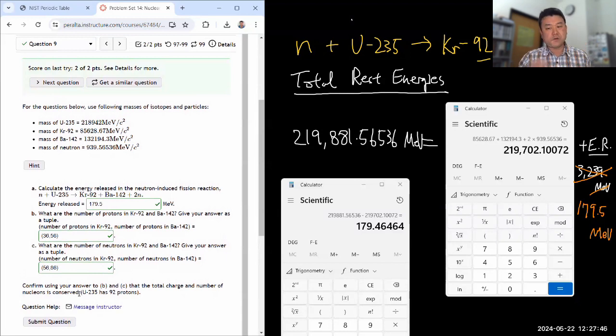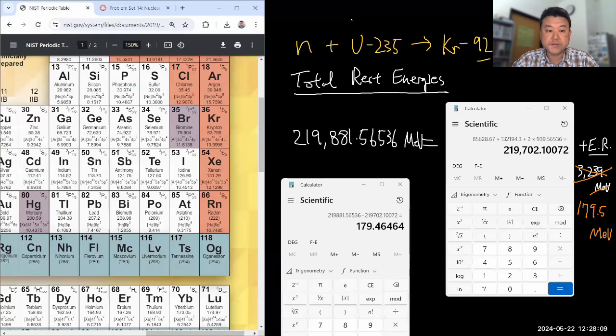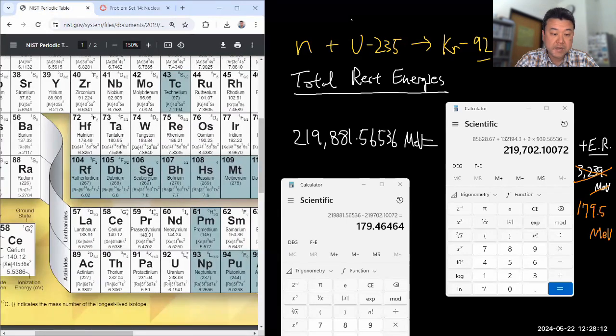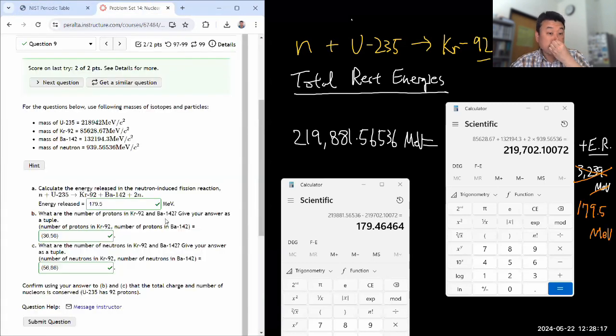Confirm using your answer to B and C that the total charge and the number of neutrons is conserved. Right. So in the fission reaction, all that amounts to is just rearranging of where the protons are, where the neutrons are. In order to change the actual number of protons and neutrons, you need a beta decay, which is topic of the next chapter. So yeah, with 36 and 56 protons, total of 92 protons, that matches with the atomic number of uranium, 92. So 92 protons came in, 92 protons went out.